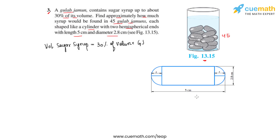The total length of the gulab jamun is 5 centimeters and the diameter is 2.8 centimeters. The diameter is the same for the cylinder and the hemispherical parts, so we can write d equals 2.8 centimeters.